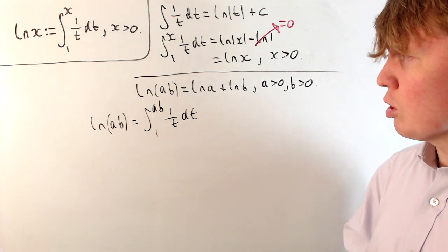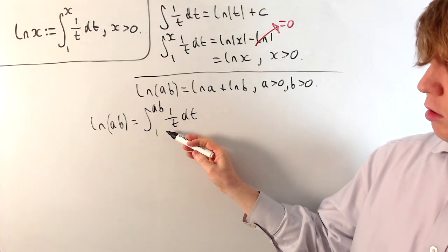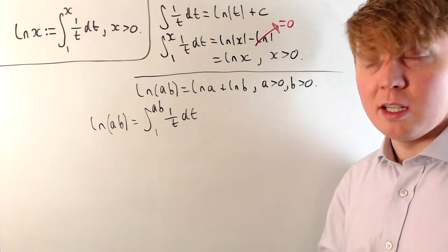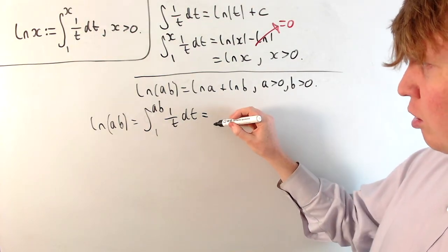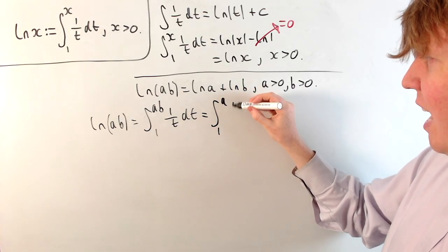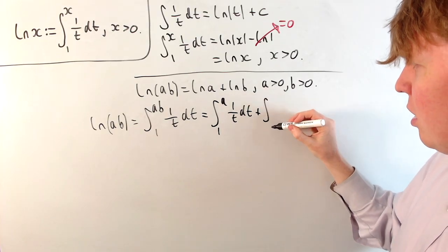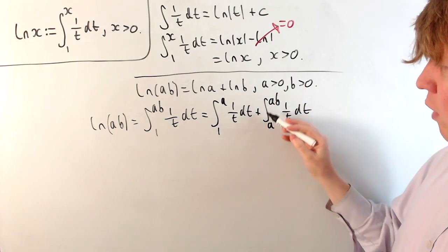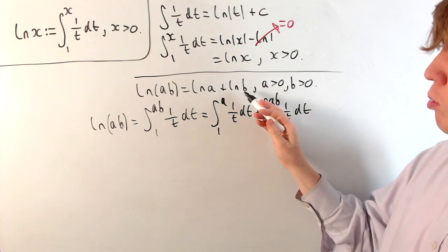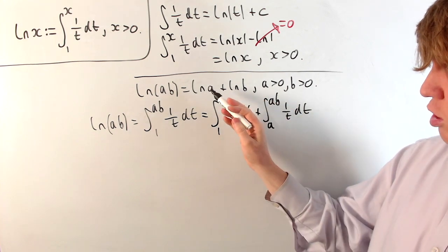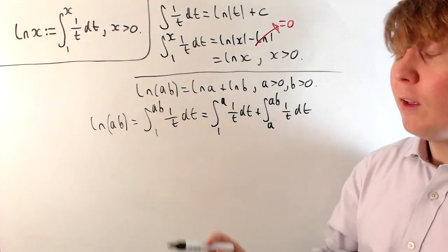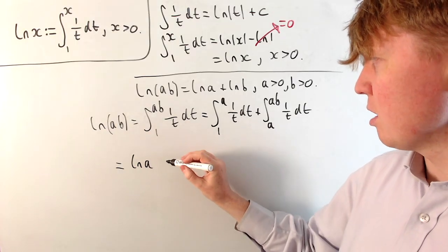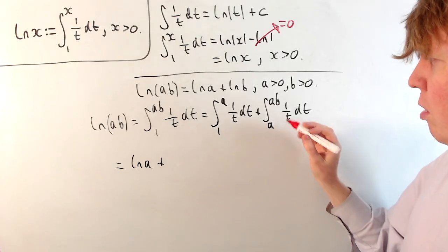We're going to introduce a substitution, but first we'll split this integral into two separate parts. From 1 up to ab, we split into the integral from 1 to a, and then the integral from a up to ab. So we write this as the integral from 1 to a of 1 over t dt, plus the integral from a up to ab of 1 over t dt. This first term is just equal to the natural logarithm of a by our definition, which is really nice. So we get ln(a) plus this new integral.